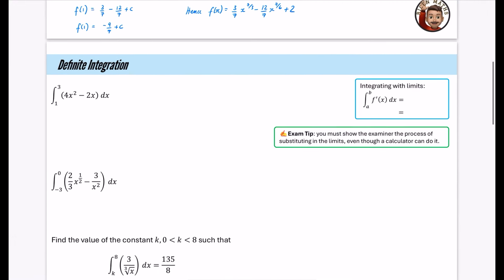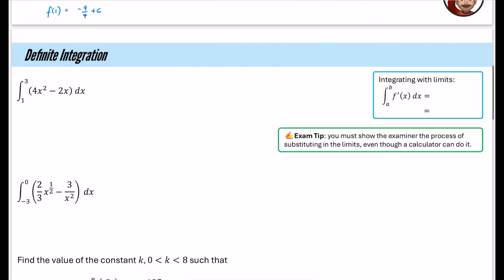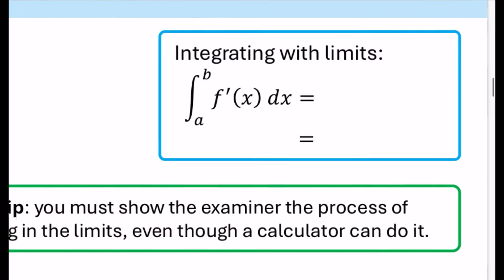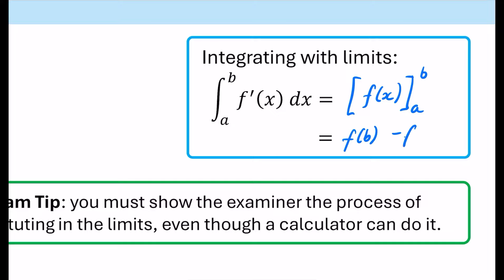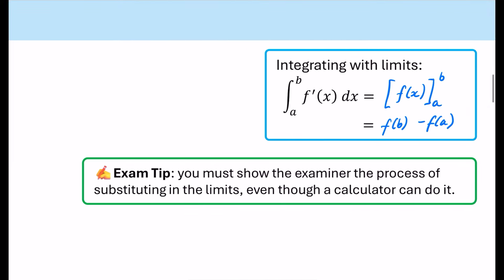Next we do definite integration, where you'll notice we have numbers at the bottom and top — sometimes called integrating with limits. If we're integrating something that was differentiated to F'(x), it integrates to F(x) plus C. But because of the limits A and B, we no longer have the plus C. Instead we write the answer in square brackets with B and A. We substitute in the top limit, substitute in the bottom limit, and subtract: F(B) minus F(A).